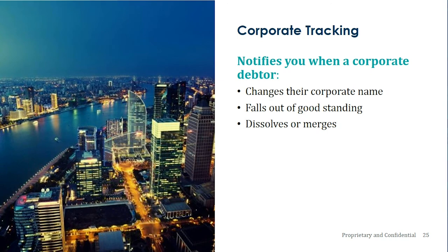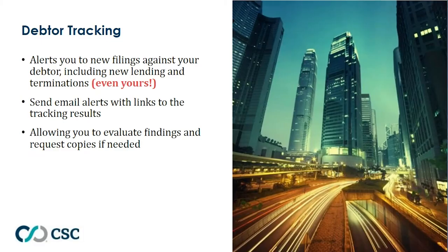Corporate tracking will notify you when a corporate debtor changes their corporate name, so you can amend your UCC filing to reflect that change. It also alerts you if the debtor falls out of good standing, dissolves, or merges. Debtor tracking alerts you to new filings against your debtor, including new lending and terminations — even yours. It will also alert you if your debtor wrongfully terminates your UCC filing. You'll receive email alerts with links to the tracking results, allowing you to evaluate findings and request copies if needed.